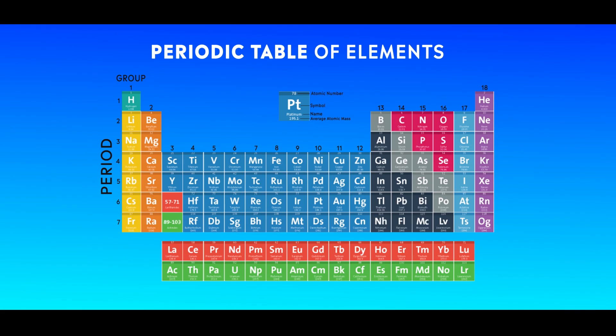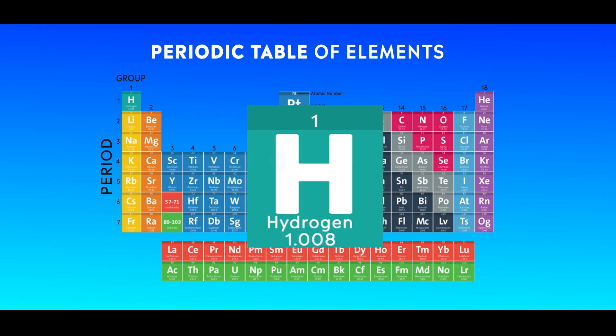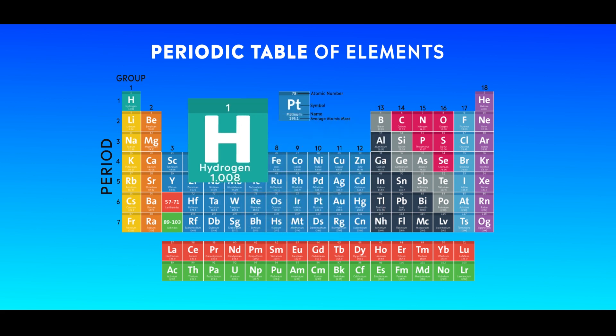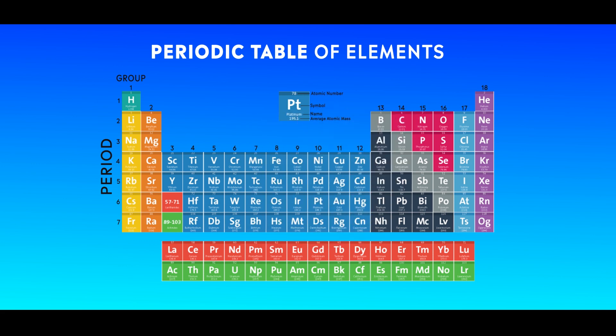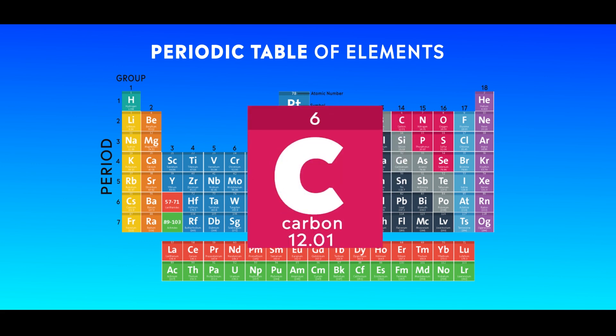For example, hydrogen has the symbol H, written in capital. Similarly, we have nitrogen, whose symbol is N, and likewise we have carbon, whose symbol is C.